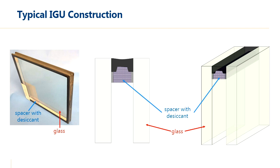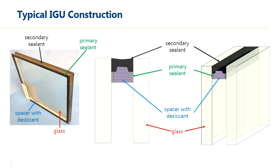The primary sealant is a thin layer of material used during fabrication to adhere the spacer to the glass. It also serves as a moisture vapor retarder to limit the amount of moisture vapor between the two glass panes. Finally, there's a secondary sealant that provides structural integrity and attaches the two panes of glass to the spacer and to the primary sealant.